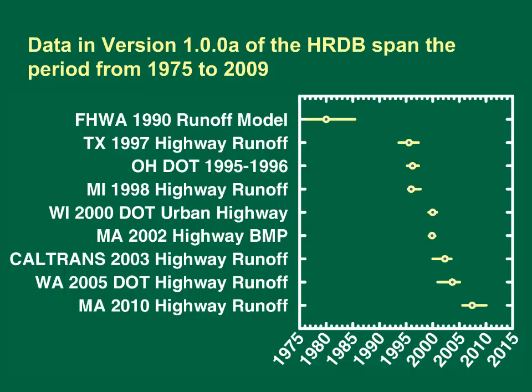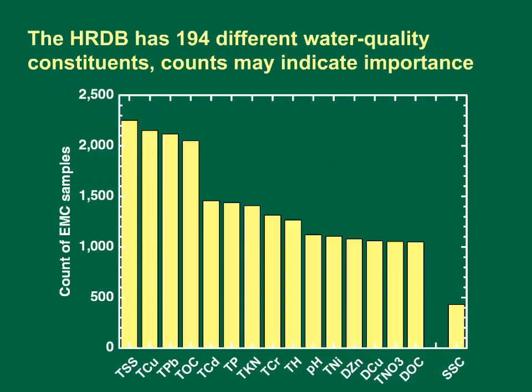Data in version 1.0.0a of the Highway Runoff Database spanned the period from 1975 through 2010. The Federal Highway Administration dataset was collected during the period from the mid-1970s to the mid-1980s. Three datasets were collected during the mid to late 1990s. Another three datasets represent data collected during the early 2000s, and the Massachusetts dataset was collected in the late 2000s to 2010.